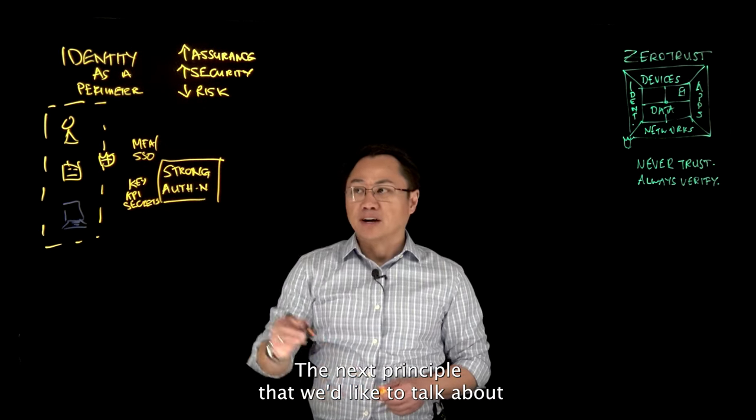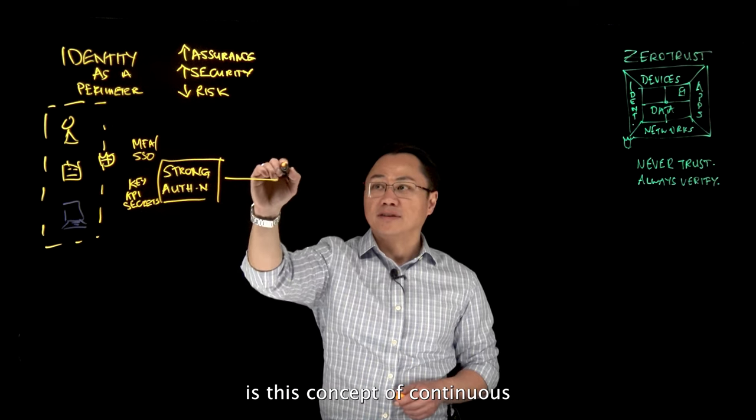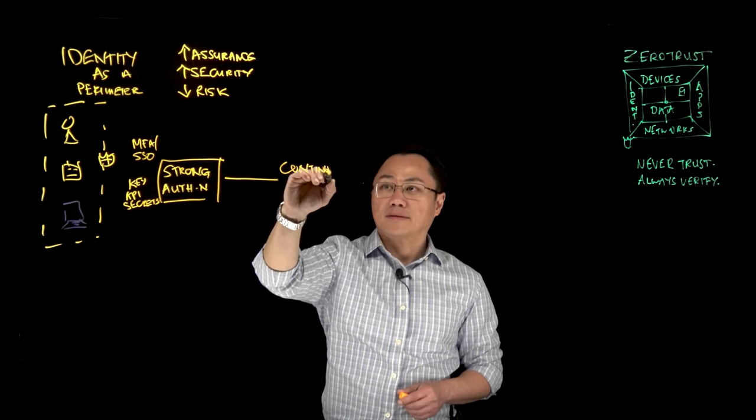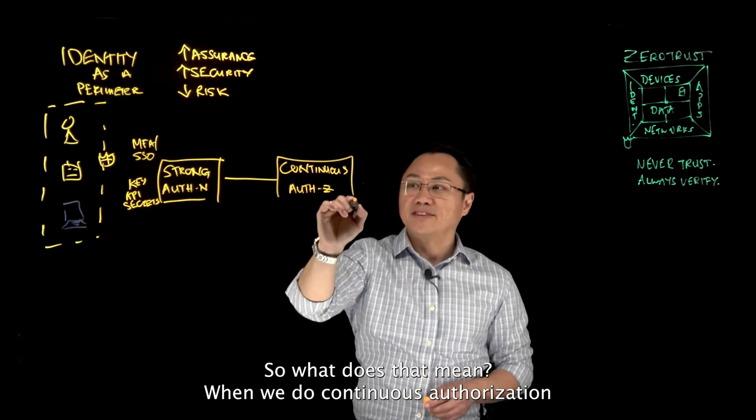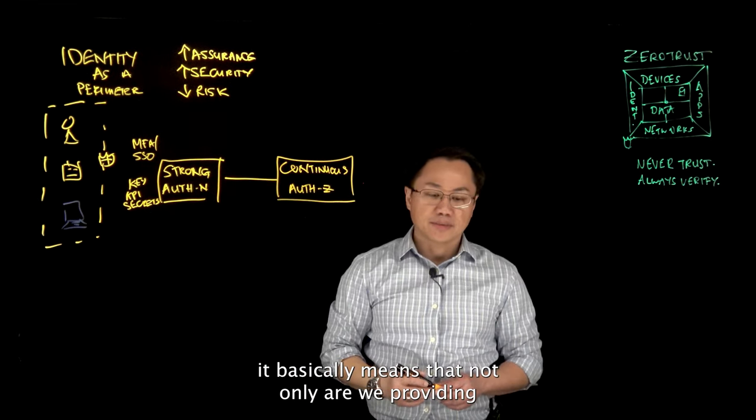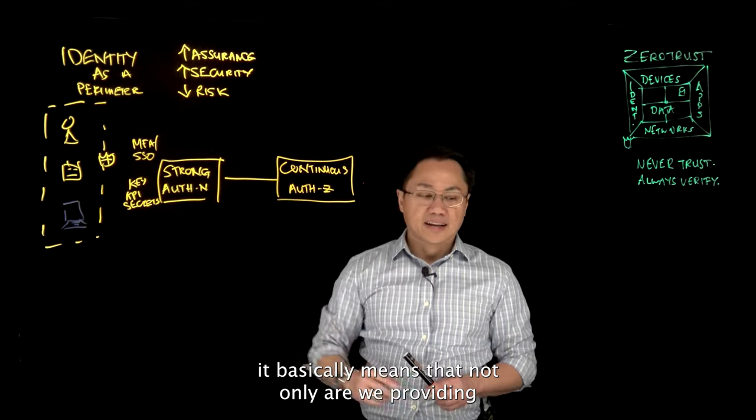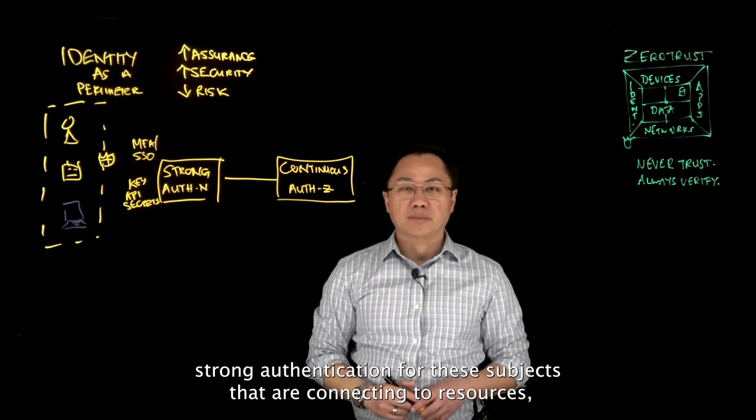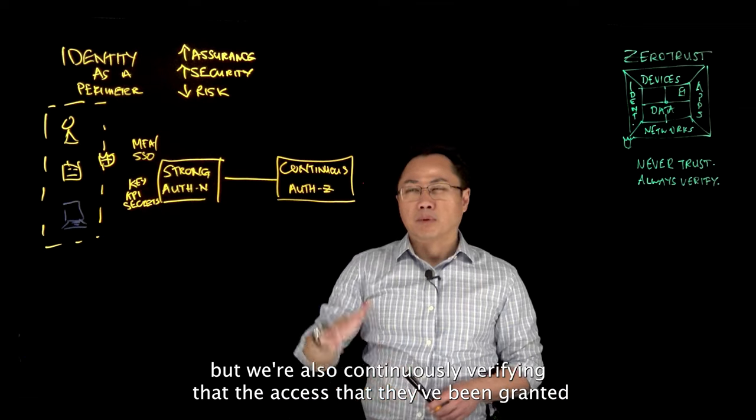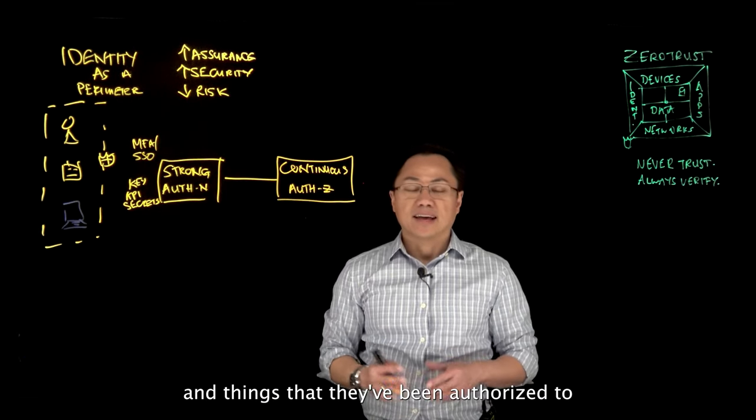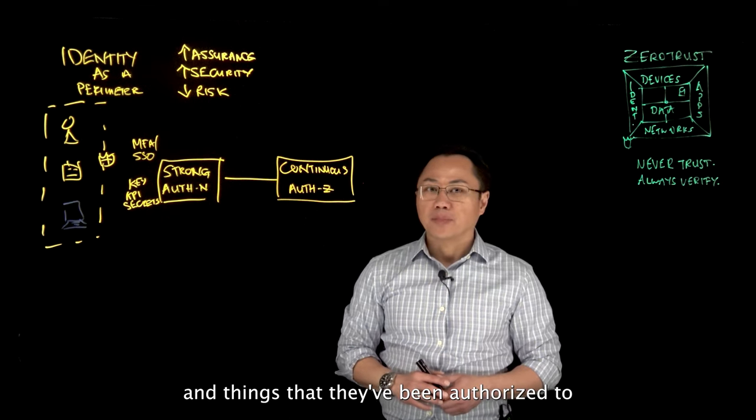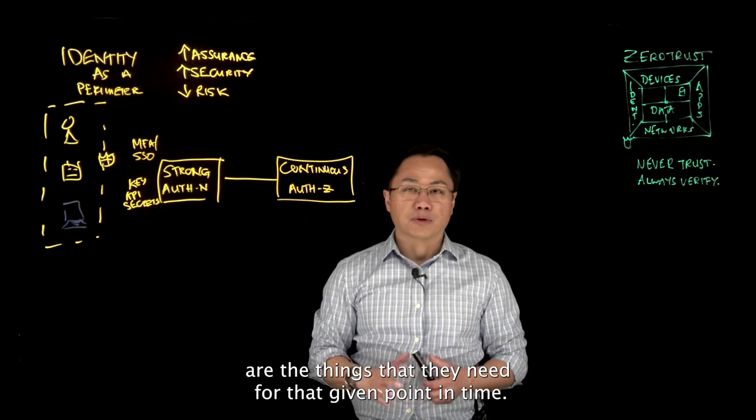The next principle that we'd like to talk about is this concept of continuous authorization. So what does that mean? When we do continuous authorization, it basically means that not only are we providing strong authentication for these subjects that are connecting to resources, but we're also continuously verifying that the access that they've been granted and things that they've been authorized to are the things that they need for that given point in time.